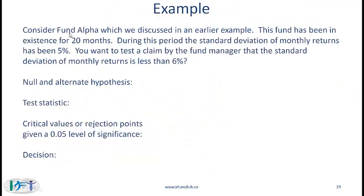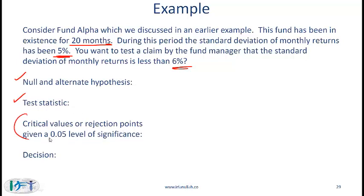Consider fund alpha, which has been in existence for 20 months. During this period the standard deviation of monthly returns has been 5%. You want to test a claim by the fund manager that the standard deviation of monthly returns is less than 6%. Try to set up the null and alternate, compute the test statistic, and find the critical value at a 0.05 level of significance. This is slightly tricky because we need to discuss the chi-square distribution.